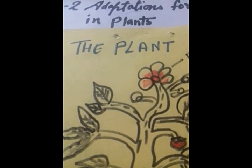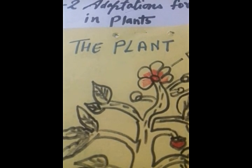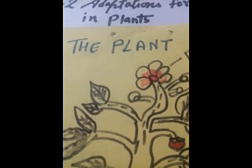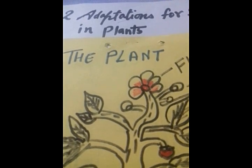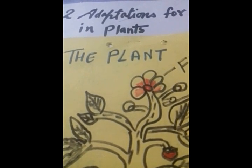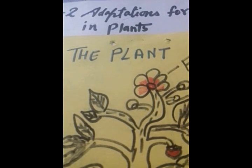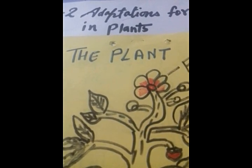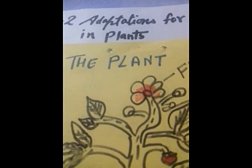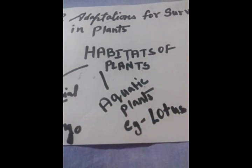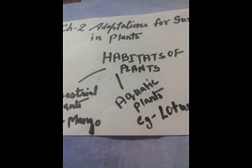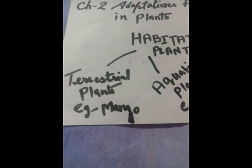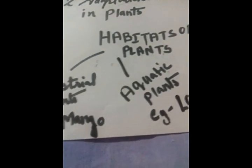Next, after adaptation, we will see habitat. The place where a living thing lives or grows naturally is called its habitat — meaning that place is suitable for them to live. Plants differ greatly in habitats and can be divided into two types: terrestrial plants and aquatic plants.